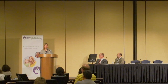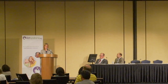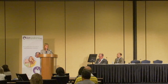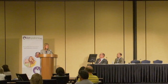For Rett syndrome, we have a little more information on specific genotypes, but fairly limited data on epilepsy-specific genotype-phenotype correlations. Some groups suggest that more severe mutations — larger deletions, early truncation, or severe missense mutations — may be associated with earlier onset or more severe epilepsy, whereas milder mutations such as late truncating, C-terminal deletions, or other missense mutations might be protective. There's also a little data on polymorphism in the BDNF gene, but that's not as clear.